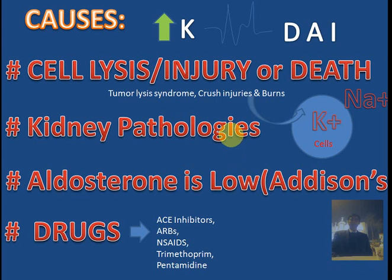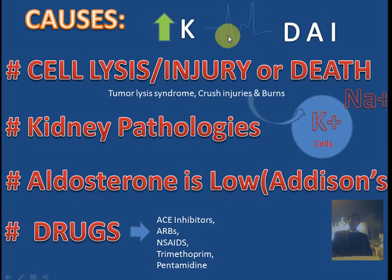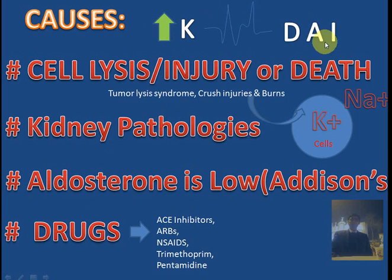Causes. I have made a small mnemonic which says K-D-I-E. If you have increased potassium, you die — that is true. Excess potassium is lethal. I have tried to make an EKG using my mouse to show peaked T-waves, absence of P-waves, and widened QRS complexes when there is excess potassium. K refers to kidney pathologies, D refers to drugs, A refers to aldosterone, and I refers to injury.